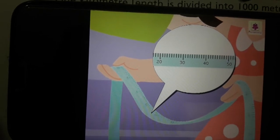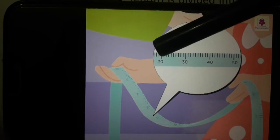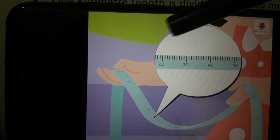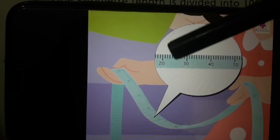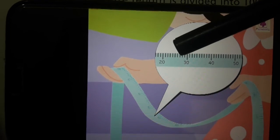You can see here these big lines tell us about the meter: 20 meter, 30 meter, 40 meter, and 50 meter. But the small lines tell us that these are the centimeters. So centimeters are used for small objects like a common pin will be measured in centimeters.